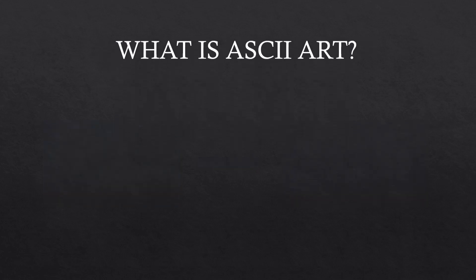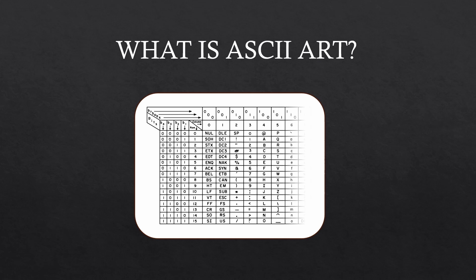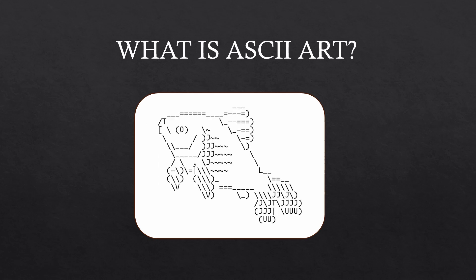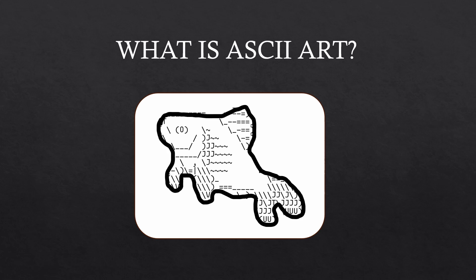ASCII art is a design made using only the 95 printable ASCII characters defined in the ASCII standard. It involves arranging the characters in intricate and innovative ways to form images. For example, this is the ASCII art of a fish. In order to make an ASCII art generator, we need to identify the features of an image. Taking the fish example, we need to find the outline of the fish to fill with characters and leave the body black. As humans, this is a relatively easy task to do, but for computers that deal in zeros and ones, this is rather difficult.